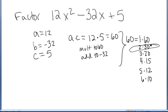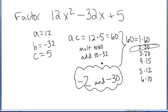That would be 2 and 30. If I select negative 2 and negative 30, multiplying them together would give positive 60, adding them together would give negative 32.